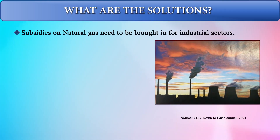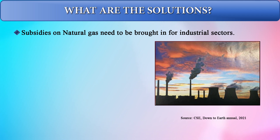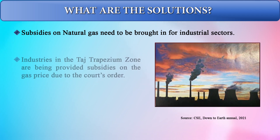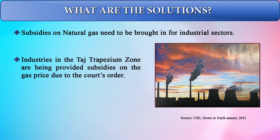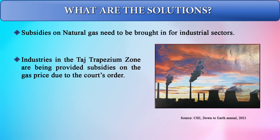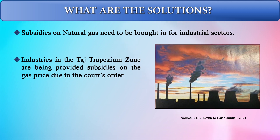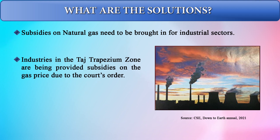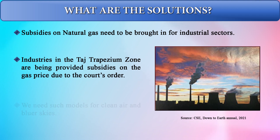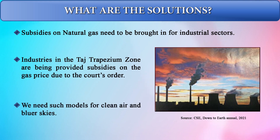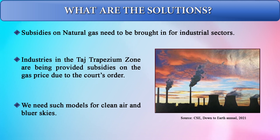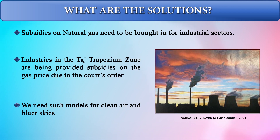Solutions to these pollution problems include subsidies on natural gas for industrial sectors. Industries in the Taj Trapezium Zone are already being provided gas price subsidies due to court orders. Such models need to be replicated broadly to provide clean air and bluer skies.